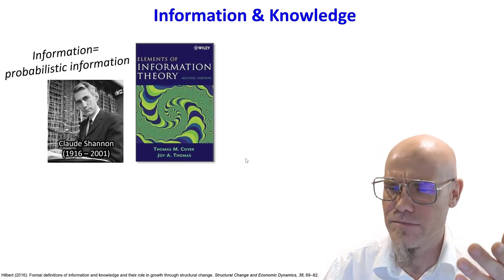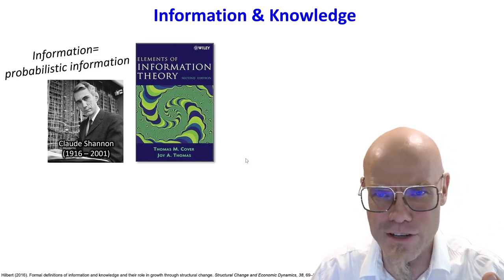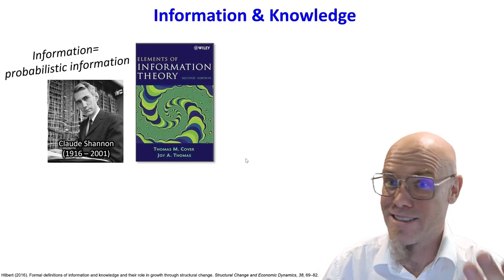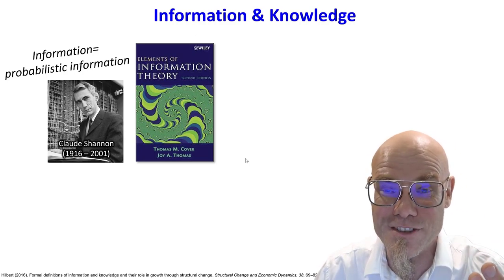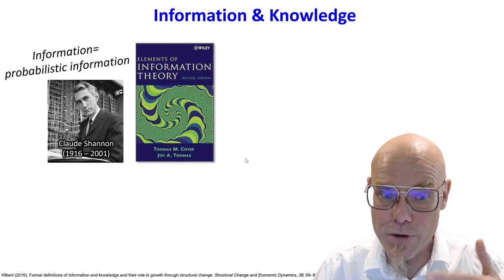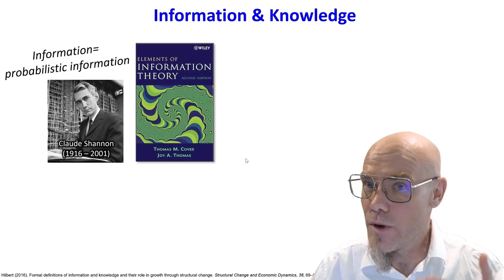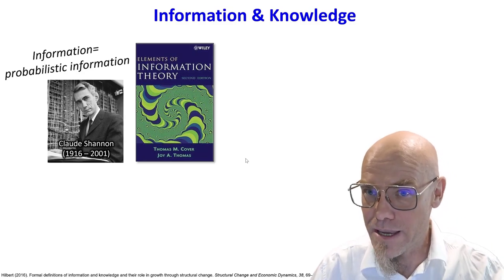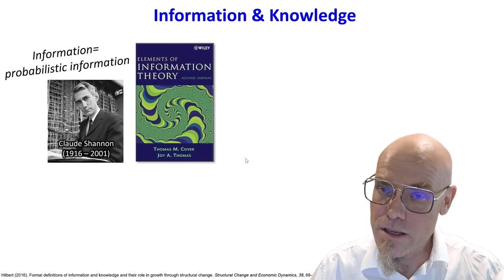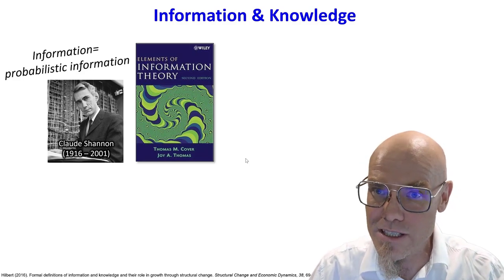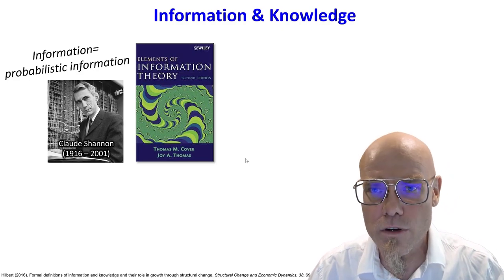So he said, if we can measure uncertainty with probabilities, hence we can measure the other side of the coin, which is information. So basically it's a probabilistic theory where he measures information as the reduction of uncertainty. How much uncertainty do you reduce? And if you reduce uncertainty by half, that's one bit.